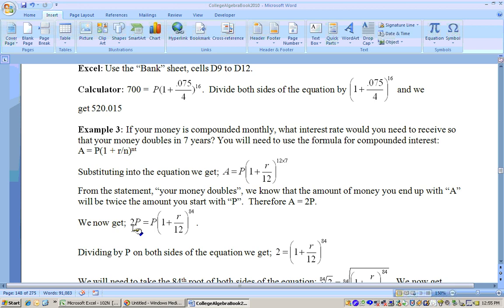So this gives me 2P equals P times 1 plus r over 12. That's because it's compounded monthly on this problem. And the 84 comes from taking the n times the t. It's 12 monthly for seven years, and 7 times 12 is 84.